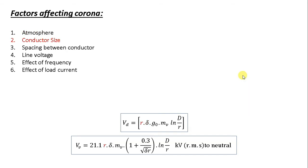The second factor is conductor size. The corona effect depends upon the shape and condition of the conductor. Here, r is the radius of the conductor, and we have factors m0 and mv. A rough and irregular surface gives rise to more corona because unevenness of the surface decreases the value of breakdown voltage, Vd and Vv.